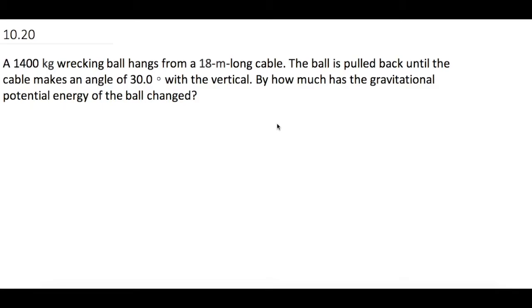A 1400 kilogram wrecking ball hangs from an 18 meter long cable. The ball is pulled back until the cable makes an angle of 30 degrees with the vertical. By how much has the gravitational potential energy of the ball changed?